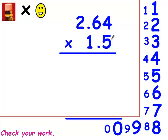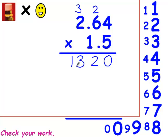First thing I'm going to do is multiply by 5. 5 times 4 is 20 — I'm going to carry the 2. 5 times 6 is 30, plus 2 is 32. 5 times 2 is 10, plus 3 is 13. You should have 1, 3, 2, 0 on your first row.